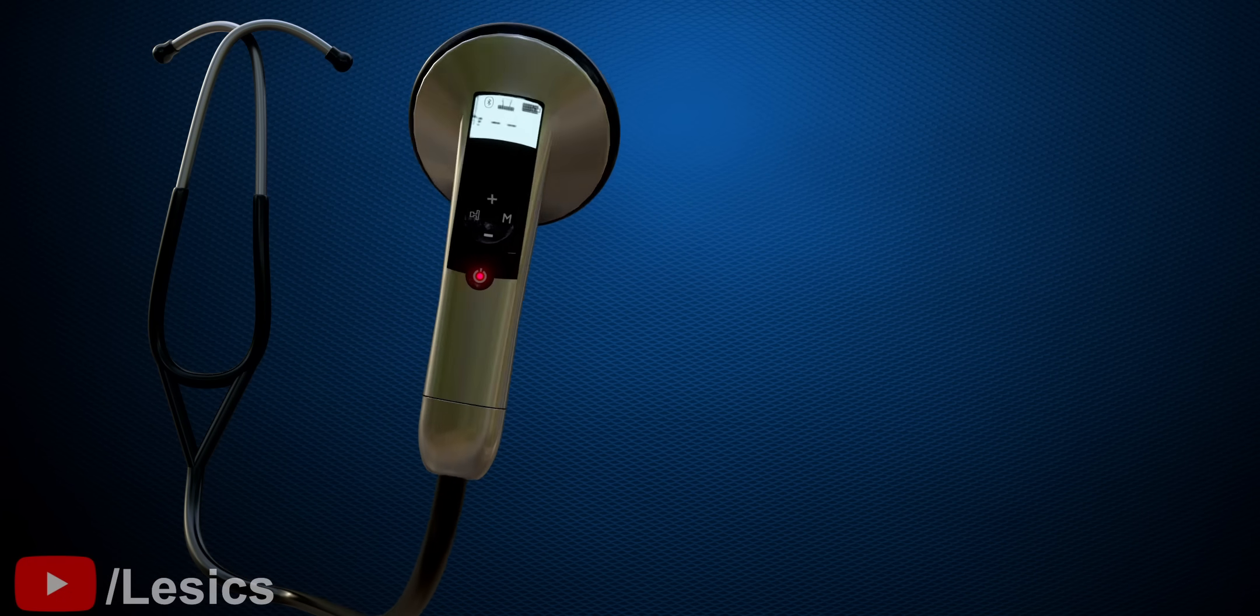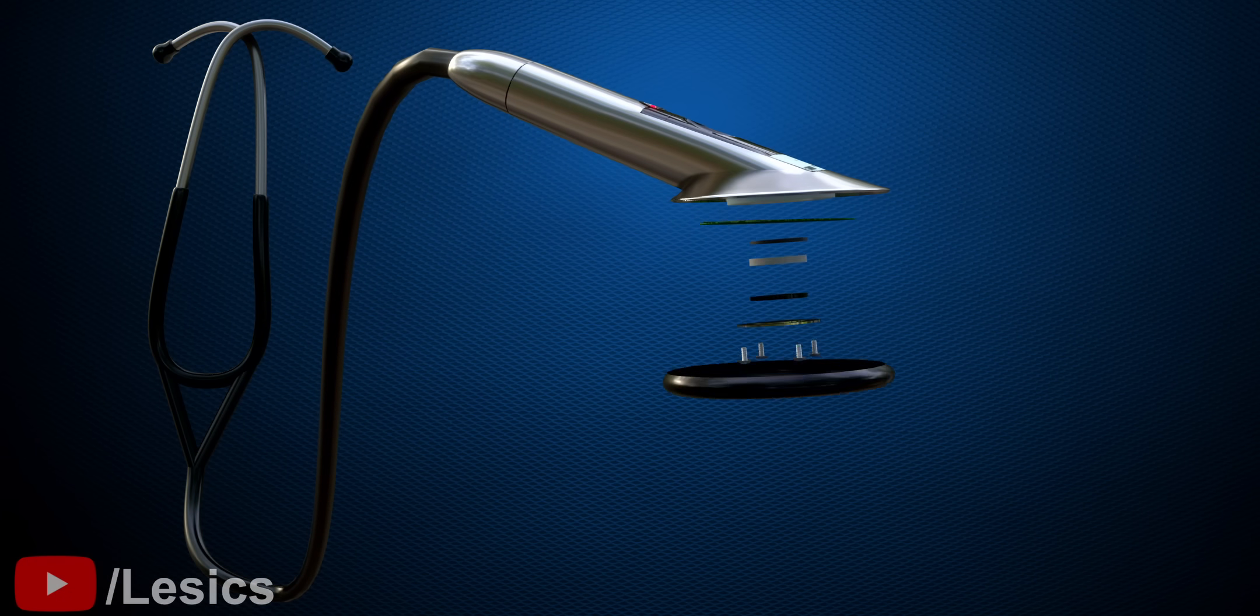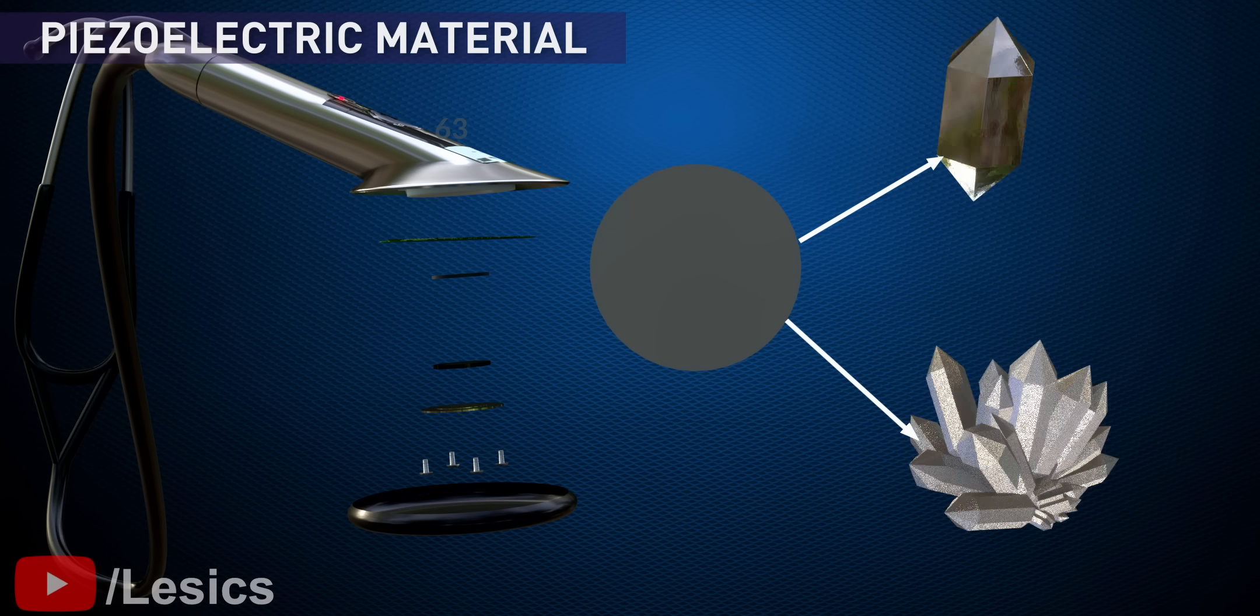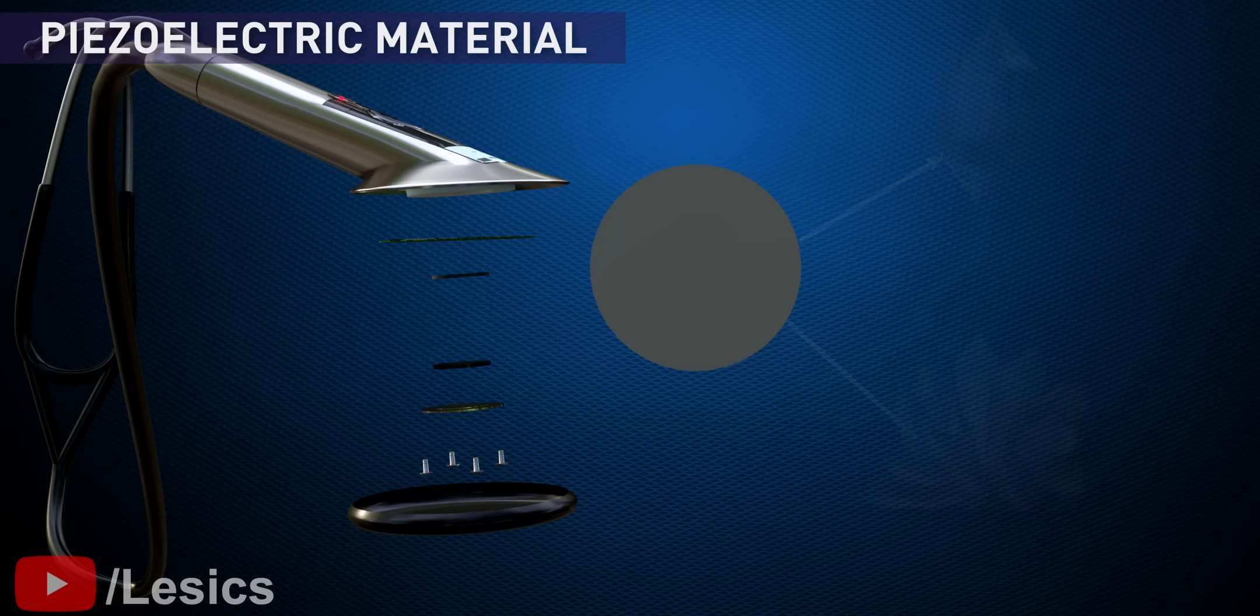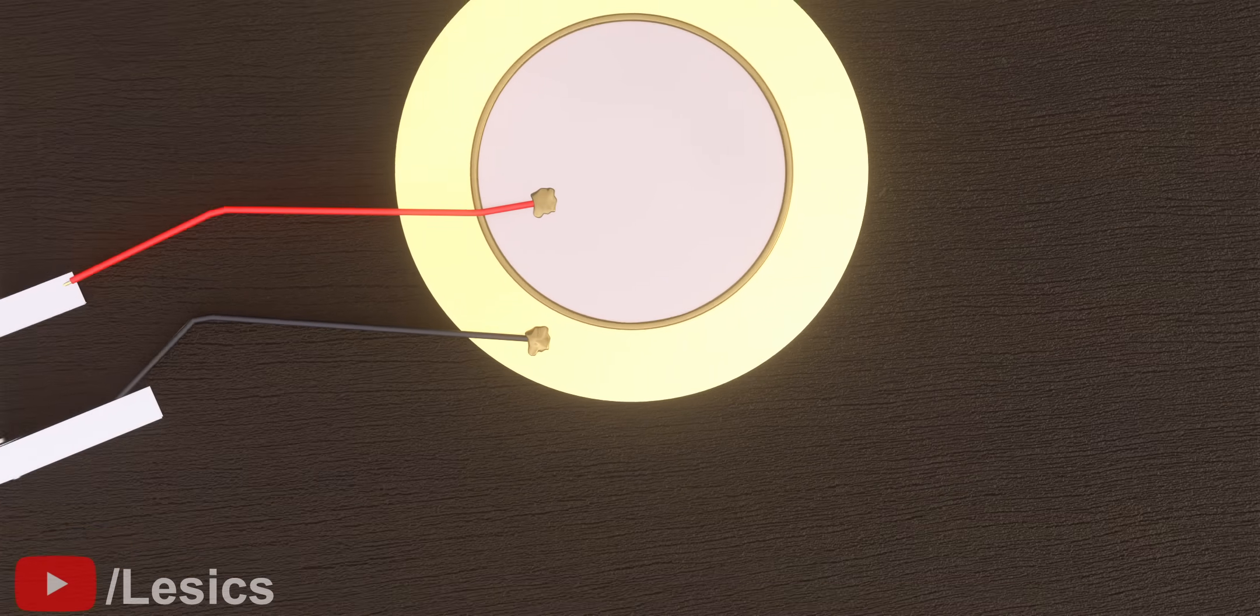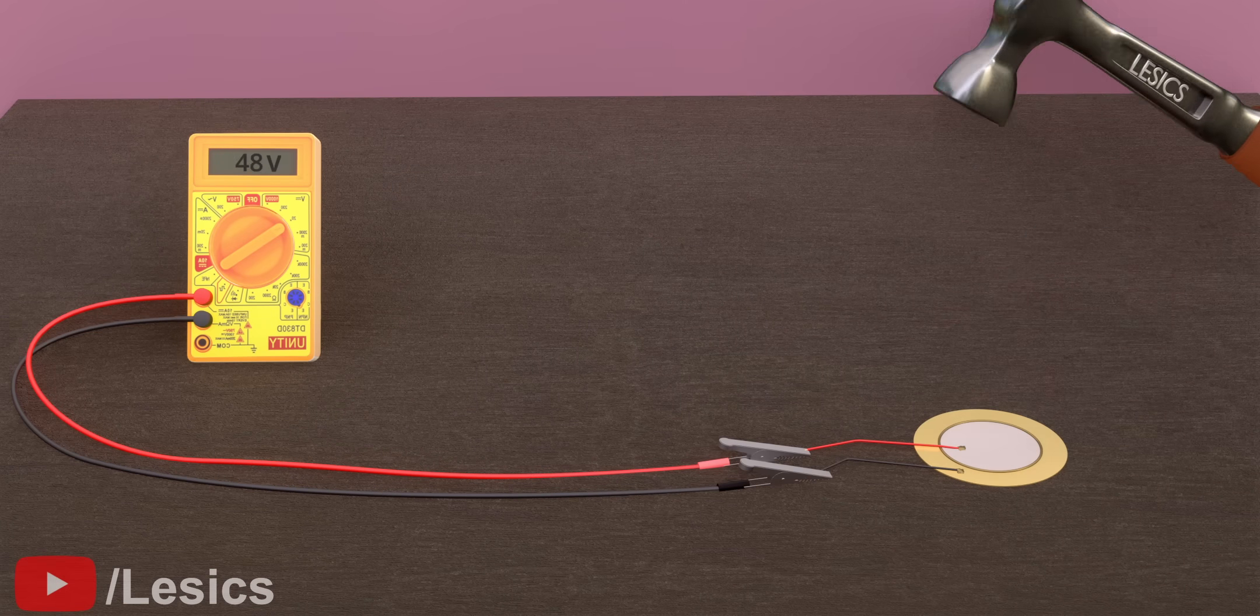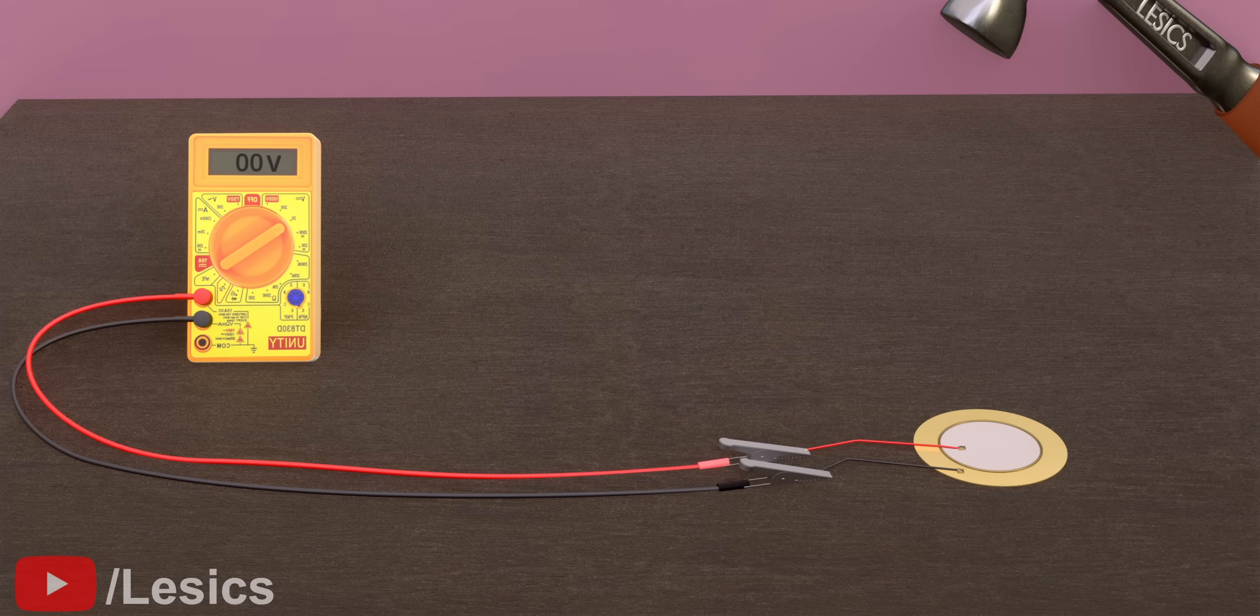One of the most popular ways used to convert sound signal to electrical signal is using a piezoelectric material. The special property of piezoelectric material is that when external stress is applied across the material, it can generate voltage. Let's take a look at how these materials are able to exhibit this unique property.